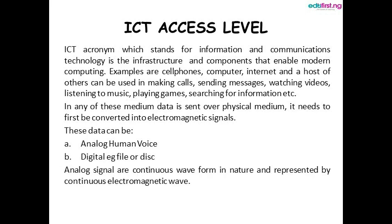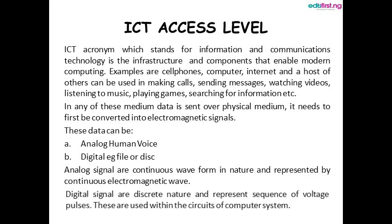Analog signals are continuous waves in nature and represented by continuous electromagnetic waves. Digital signals are discrete in nature and represent a sequence of voltage pulses, and are used within the circuits of the computer. An example of an analog signal is the human voice, while an example of a digital signal is a file or disk.